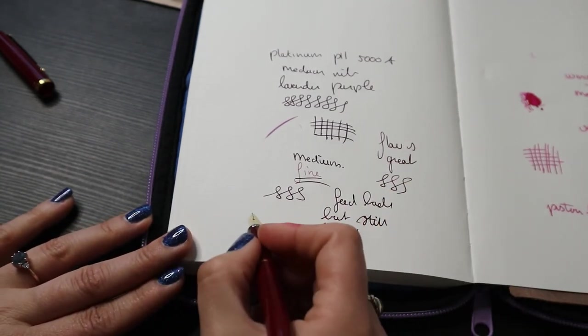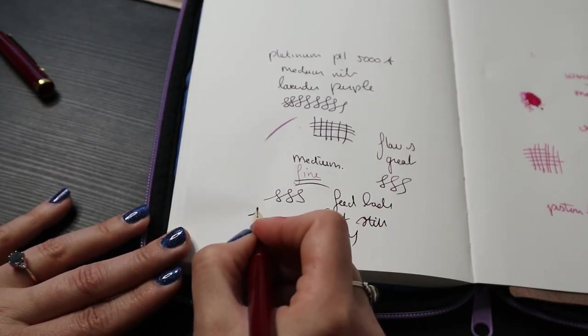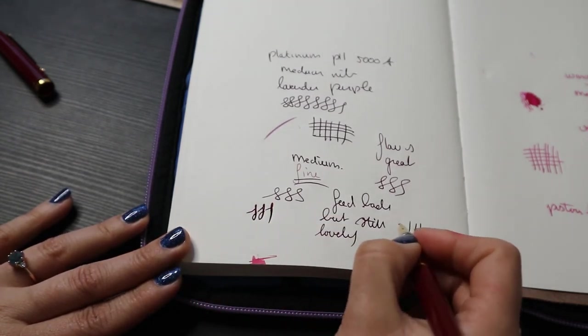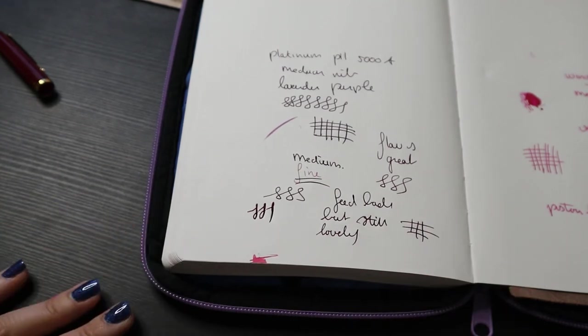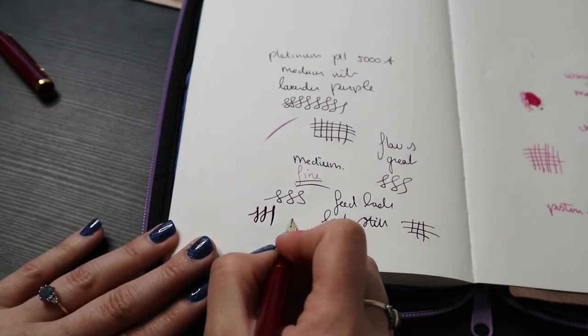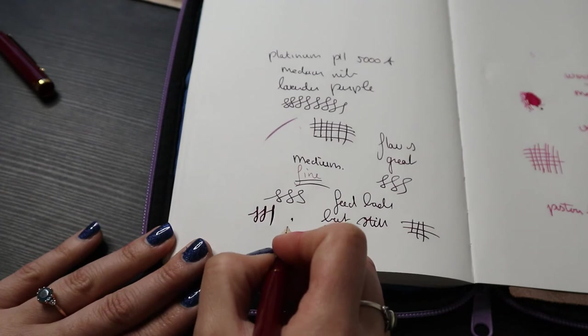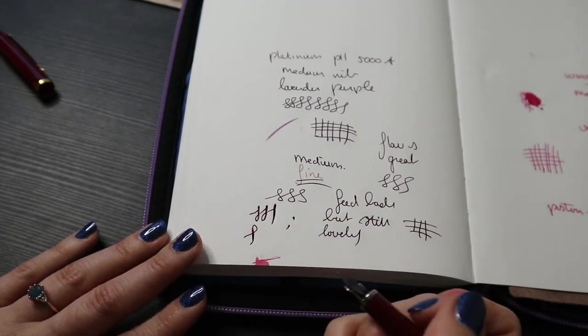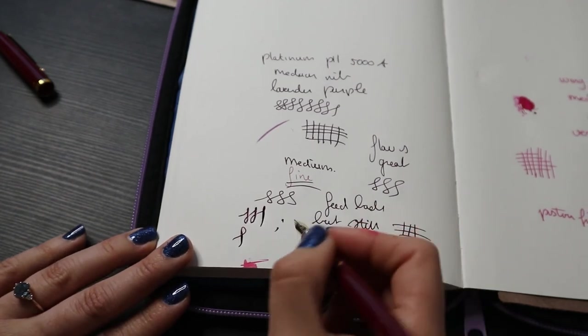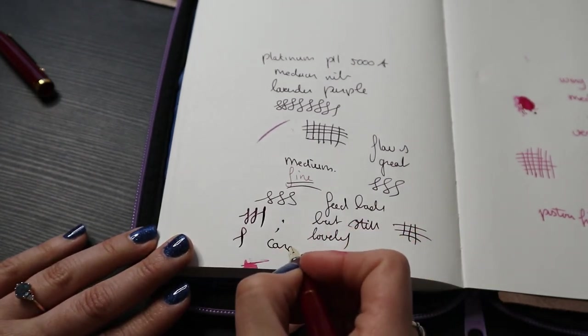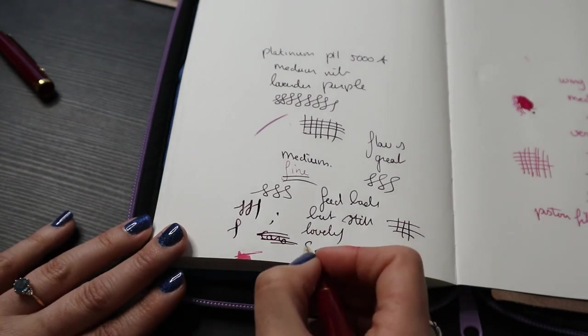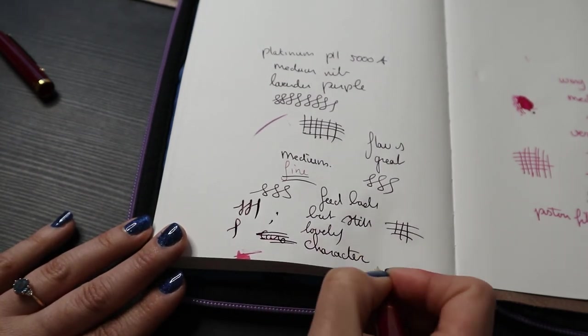I've never tried to flex this. Ooh, did not expect that. I wouldn't say it's a flex nib, but it is not stiff at all. It is bouncy. So yeah, you could get some character out of this nib. That is not how you spell character. Out of this nib.